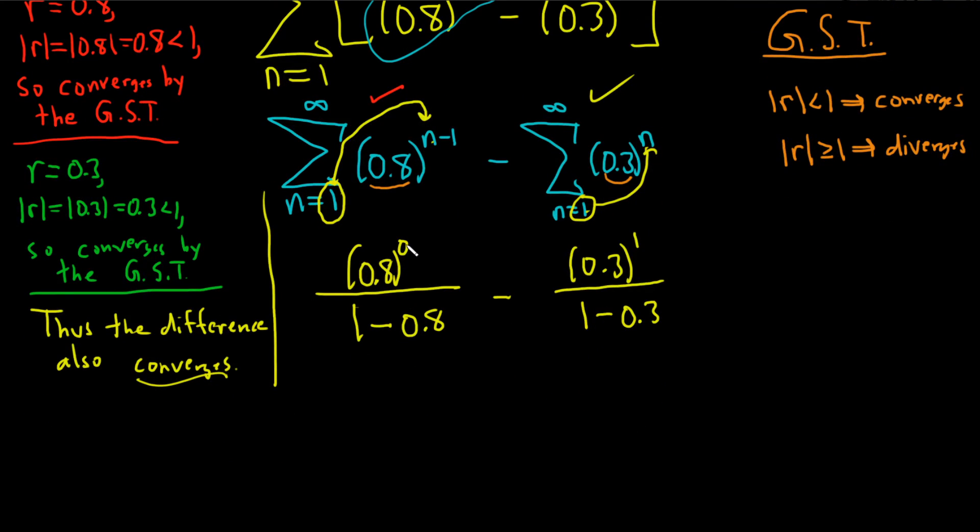0.8 to the 0 power is 1, so we get 1 over, and then 1 minus 0.8 is 0.2 minus, and here we have, let's see, 0.3 over 1 minus 0.3 is 0.7.